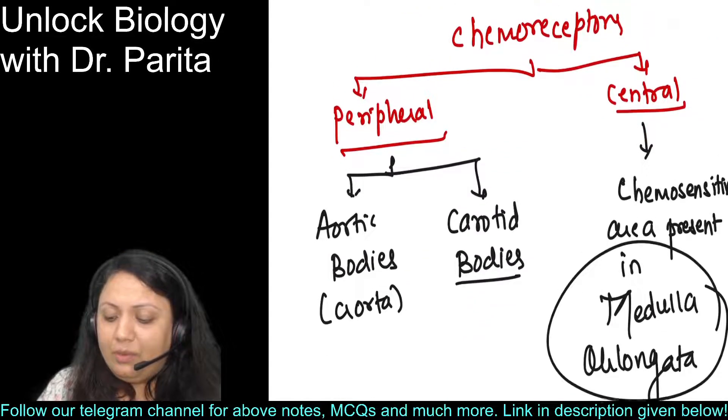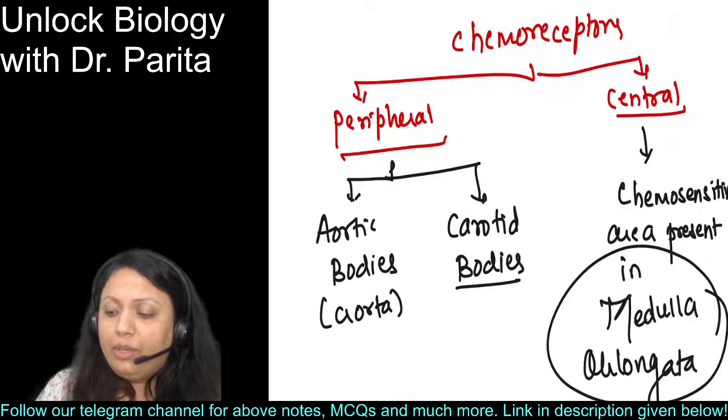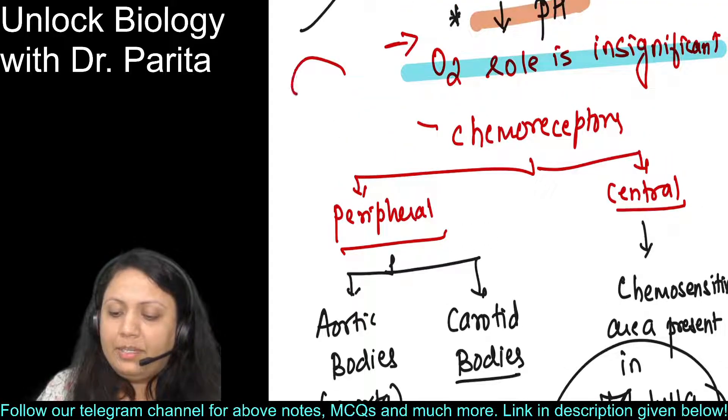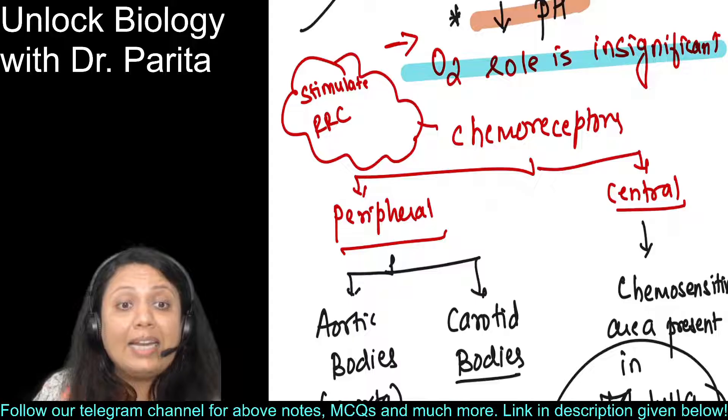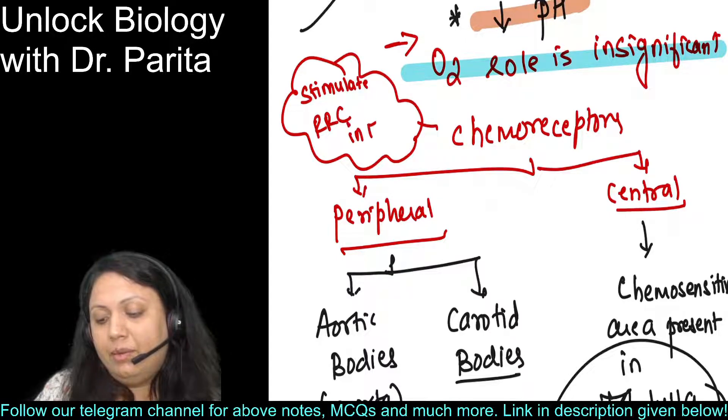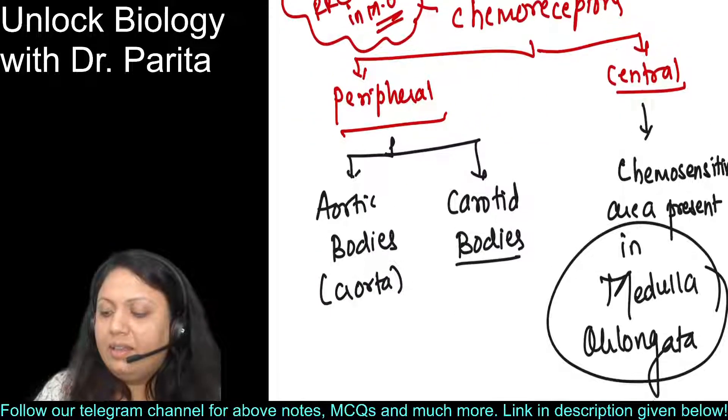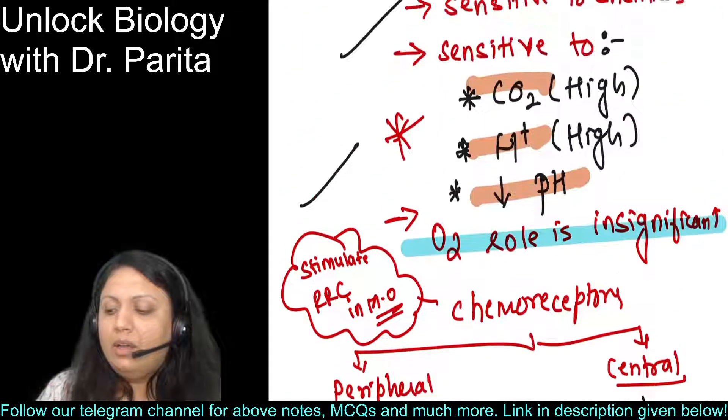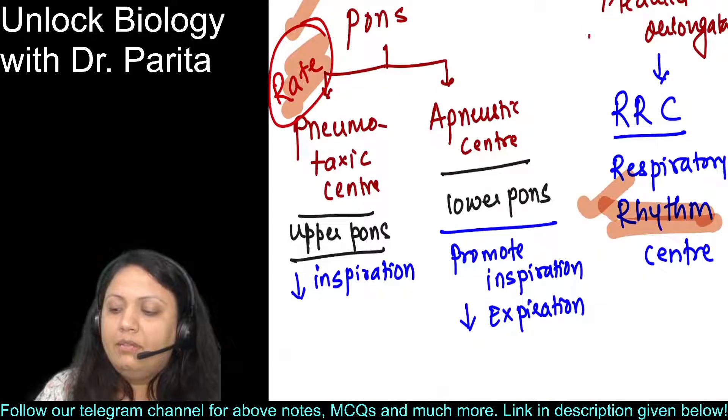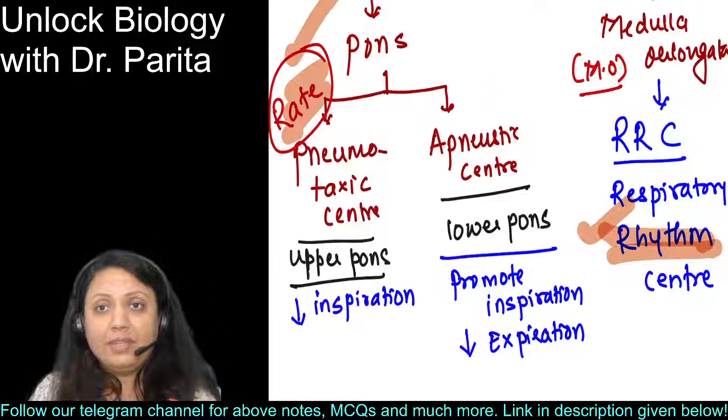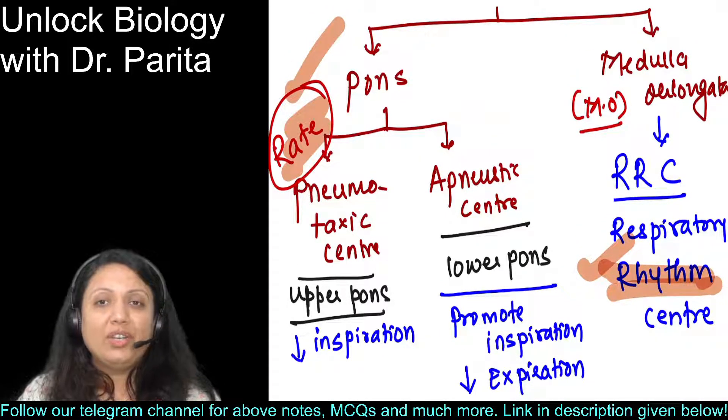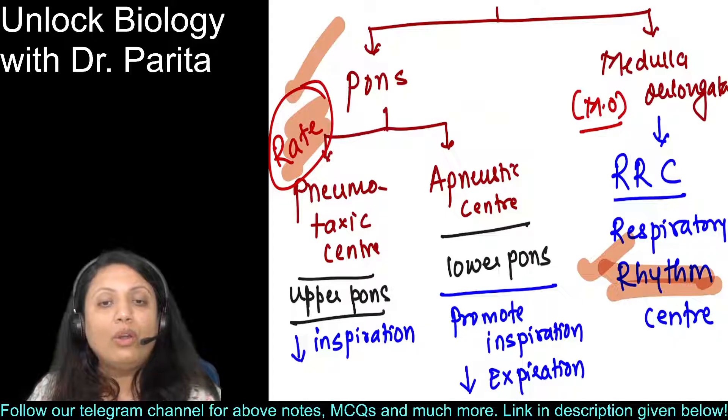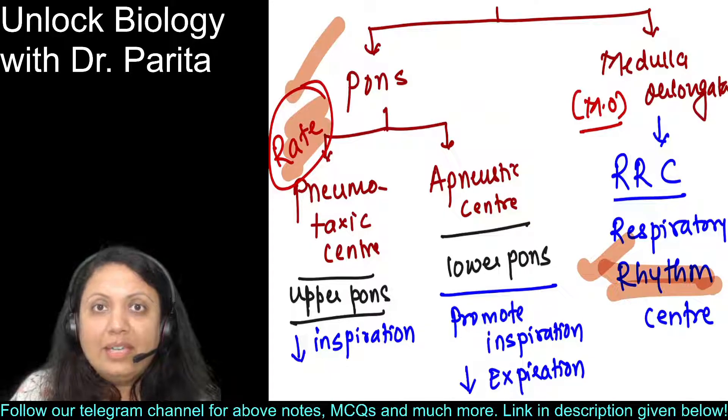As the chemoreceptors are sensitive, they are going to stimulate RRC - respiratory rhythm center in medulla oblongata. Then RRC is going to give instruction whether there is a requirement of inspiration or expiration. Is this clear to everyone?